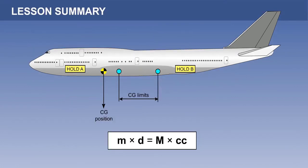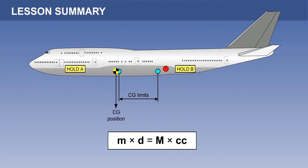In this lesson, we have resolved the problem of bringing an out-of-limit centre of gravity back into limits by using the formula m times D equals M times CC. This involves moving a mass internally within the aeroplane — the mass is moved either forward or aft to another position, which correspondingly results in a shift in the centre of gravity. The two worked examples will enable you to resolve any questions involving the moving of mass to change the centre of gravity.